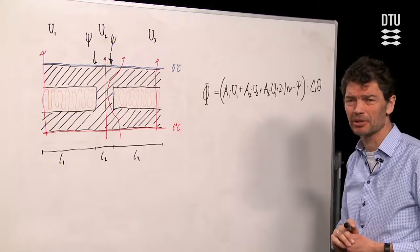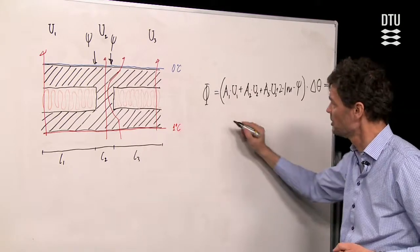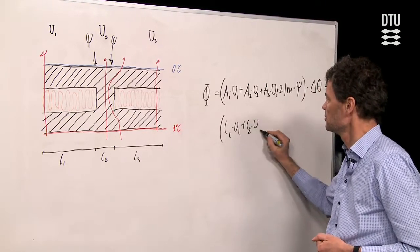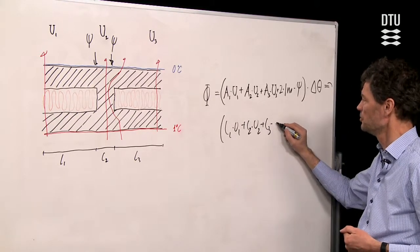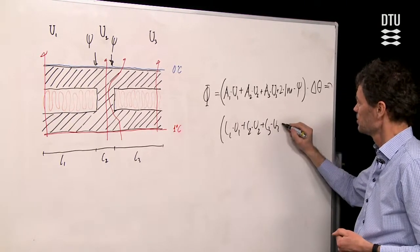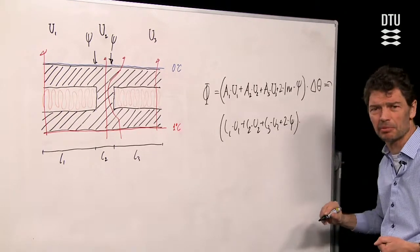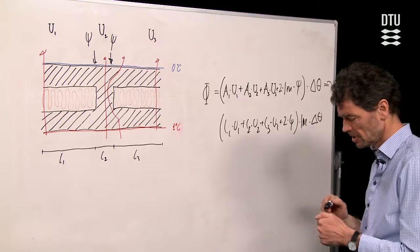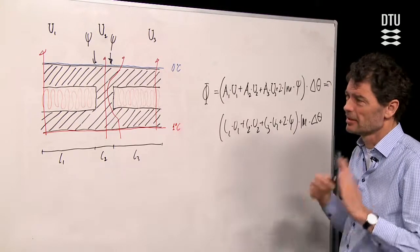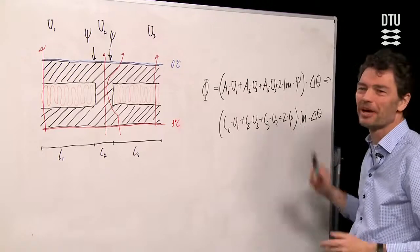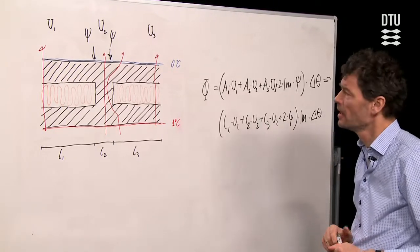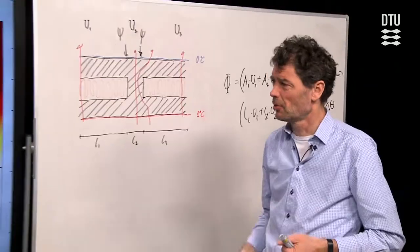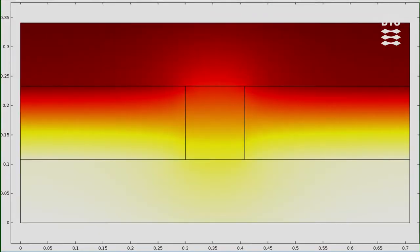I'll write this equation slightly differently. That's the length one times U one plus length two times U two plus length three times U three. And then we should have plus two times Psi. Outside of the parenthesis, I can put one meter and delta T, the temperature difference. So that leads to a calculation whereby I hope I can isolate the Psi value. But that requires that I have calculated the overall heat flow going through the wall. And this I need to do with a program for that.